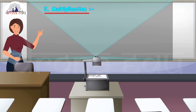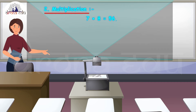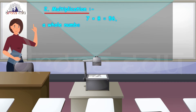Similarly, for multiplication also we can verify this. Let us consider the numbers 7 and 8. If I multiply 7 with 8, I get 56. So when I multiply two whole numbers I get a whole number as the answer. Similarly, if I multiply 0 with 15, I get 0, which is again a whole number.